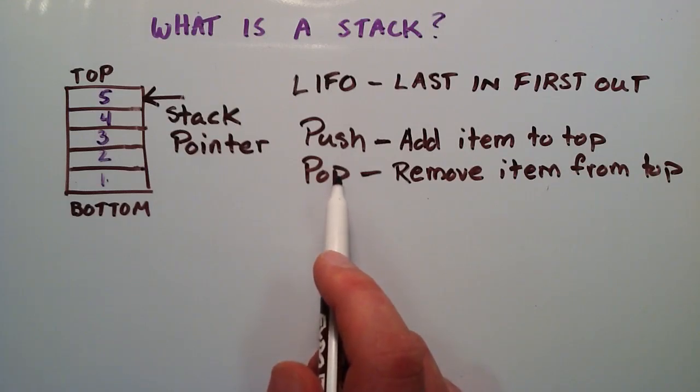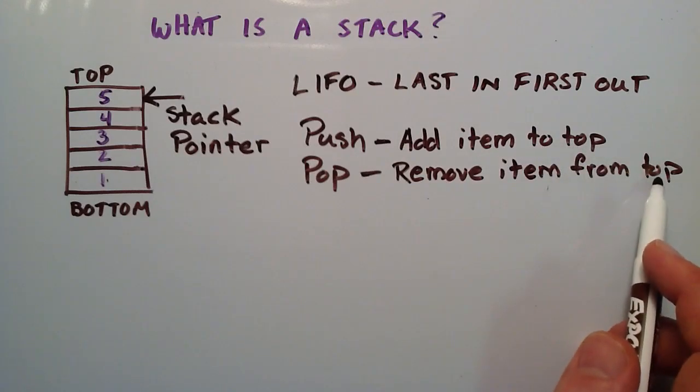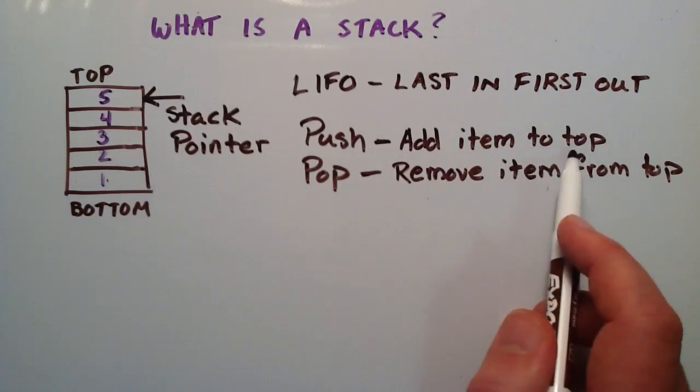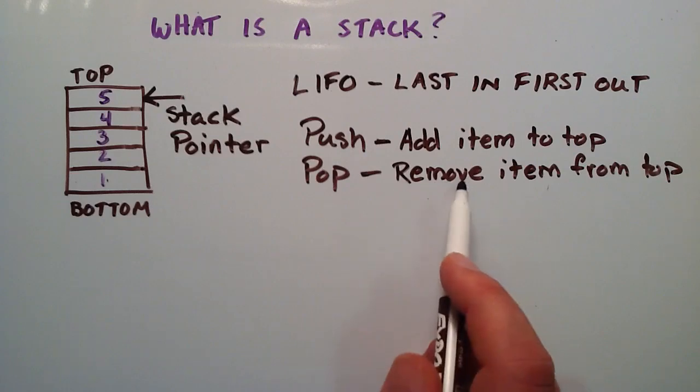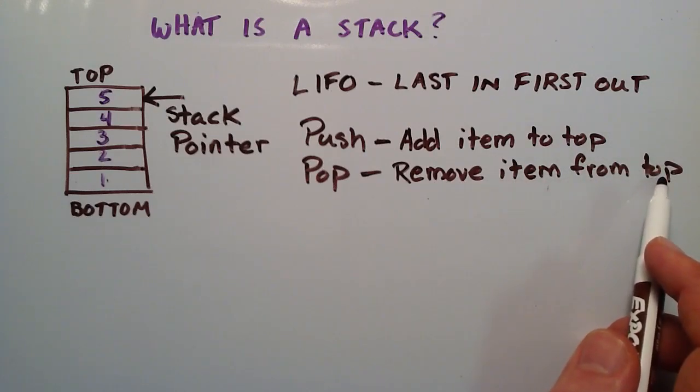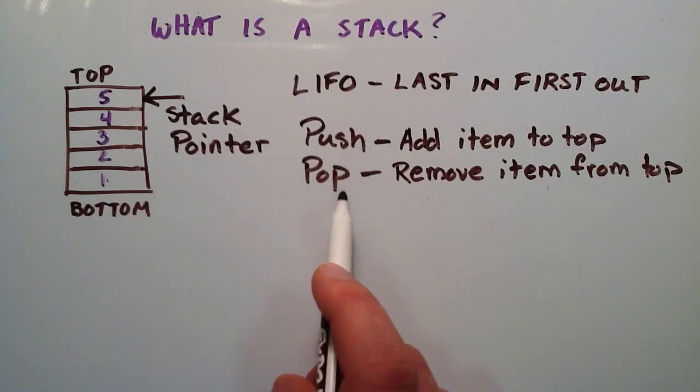And notice that they're both doing something to the top of the stack. So, if we ever add anything to a stack, we are always adding it to the top. If we ever remove something from a stack, we are always removing it from the top. So, adding an item to the stack is called pushing it. And removing an item from a stack is called popping the item.